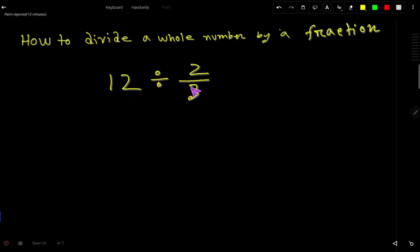12 is a dividend and 2 by 3 is a divisor. The first task is to convert this whole number as a fraction. Since this is a whole number, we can take 1 as a denominator. The value of 12 over 1 is 12.